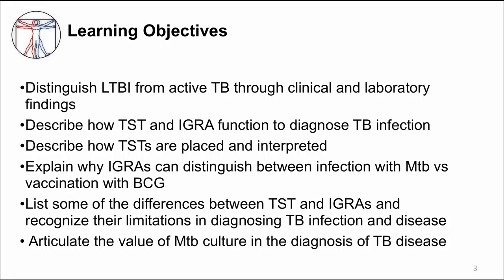To describe how TST and IGRA function to diagnose TB infection, to describe how TSTs are placed and interpreted, to explain why IGRAs can distinguish between infection with MTB versus vaccination with BCG, to list some of the differences between TST and IGRAs and recognize their limitations in diagnosing TB infection and disease, and to articulate the value of MTB culture in the diagnosis of TB disease.